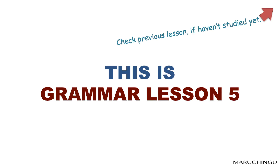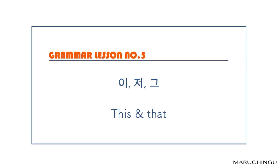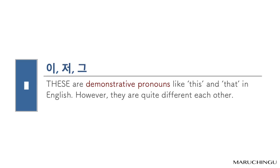This is grammar lesson 5. Check the previous lesson if you haven't studied yet. Your like and subscription will help us make better quality lessons. Let's start grammar lesson number 5: 이, 그, 저 — this and that.